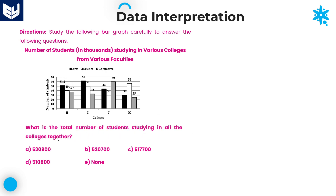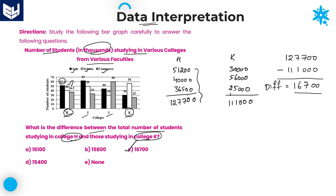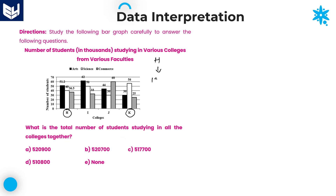Let us look at the second question: What is the total number of students studying in all colleges together? We already calculated college H total as 1,27,700 and college K as 1,11,000. Now we need to calculate the remaining two colleges, I and J.